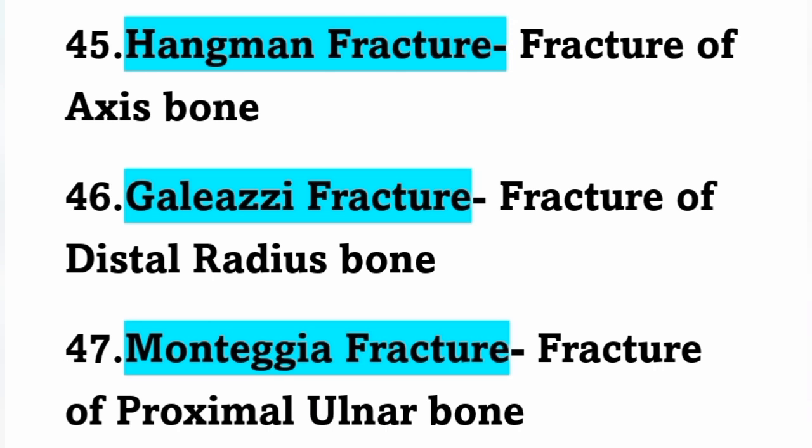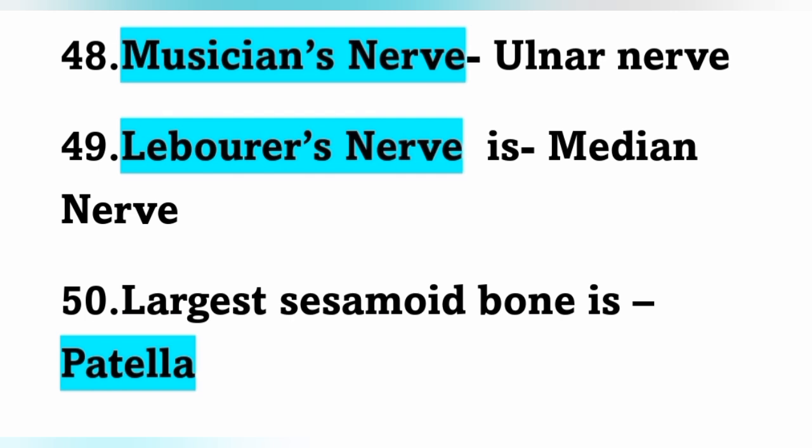To summarize fractures: Jefferson fracture — atlas bone; Hangman fracture — axis bone; Galeazzi fracture — distal end of radius; Monteggia fracture — proximal ulnar bone. Musician's nerve is the ulnar nerve and laborer's nerve is the median nerve. The largest sesamoid bone is the patella.